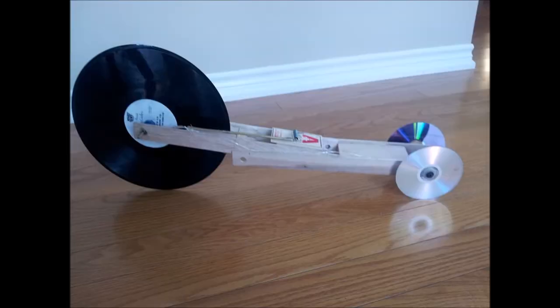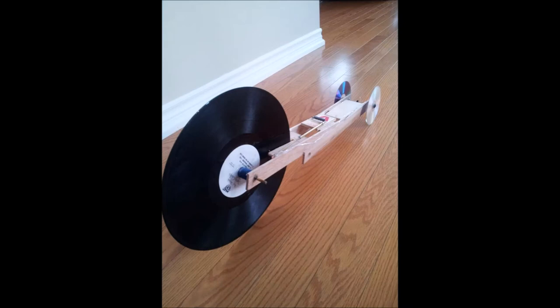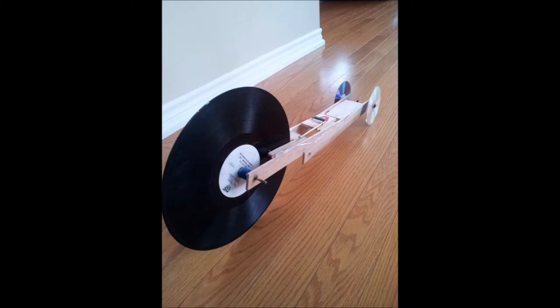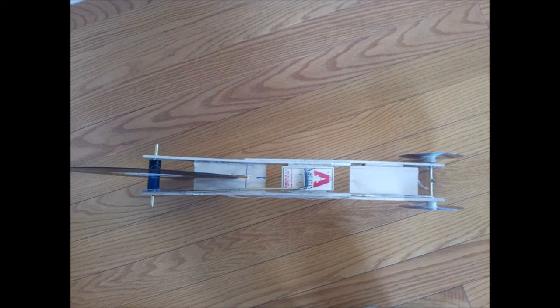Our original plan of the design for the race car changed as we began to take into account the features which could possibly make our car more efficient in terms of increasing distance. The biggest change we made to the original design is the number of CDs we put. After thinking about the design and how we could possibly make it more powerful, we decided to change the number of CDs from 4 to 3. We tried this method, but it did not go as planned since we wanted our structure to be able to go a far distance.